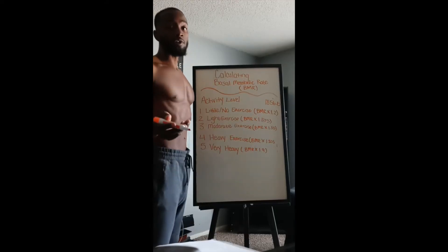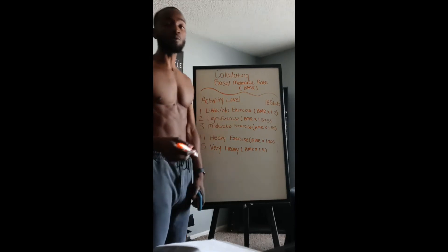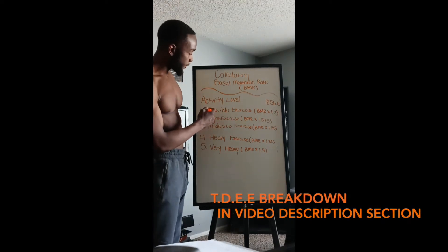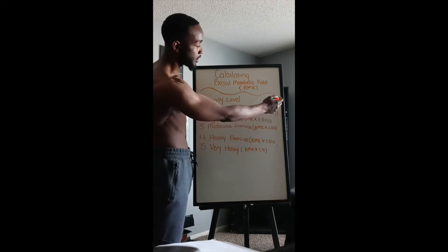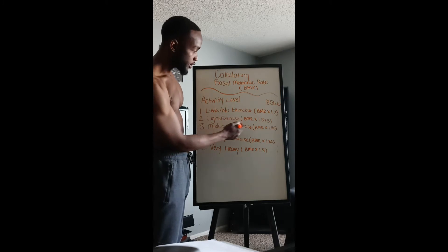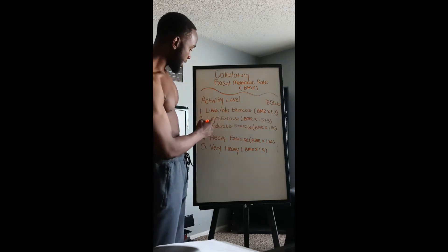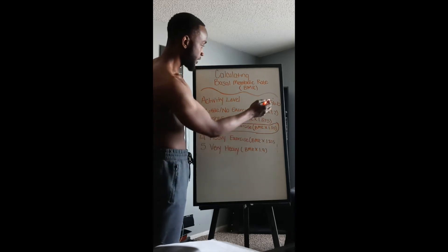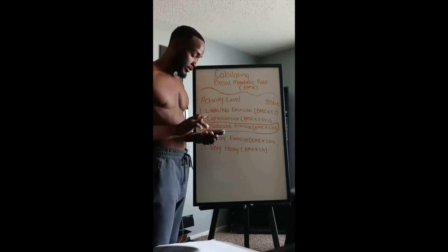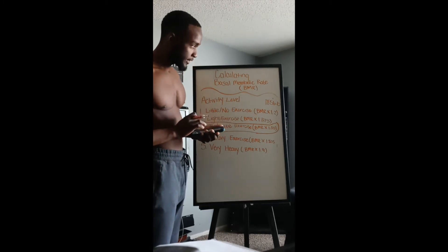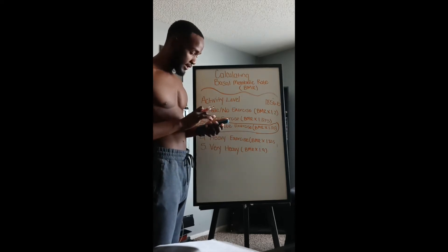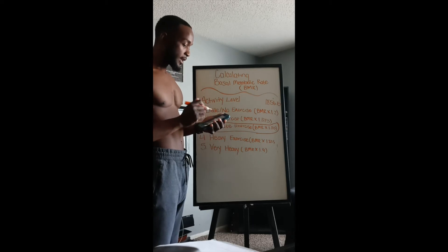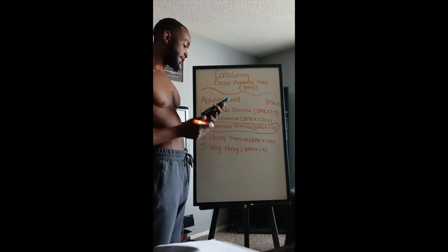Once you calculate your BMR — the basic amount of calories your body needs to sustain your current weight — you want to apply your TDEE activity multiplier. If you do little to no exercise, you multiply your BMR by 1.2. If you exercise lightly, you use 1.375. For me, I work out moderately, so I use 1.55. So 1,857 times 1.55 leaves me with a total of 2,786 calories.